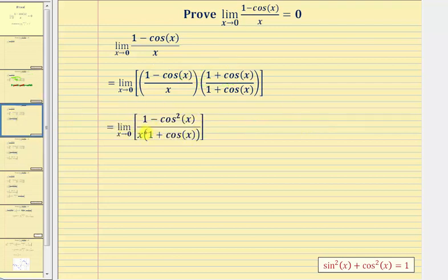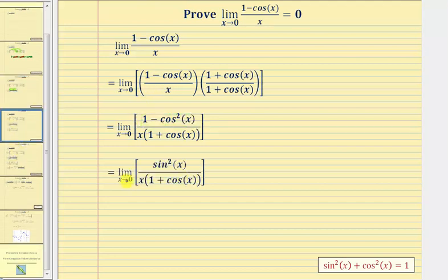So now this would be our limit. Using the Pythagorean identity, we'll perform a substitution in the numerator. If we subtract cosine squared x from both sides, we have sine squared x equals one minus cosine squared x. So now we'll substitute sine squared x for one minus cosine squared x, which gives us the limit in this form.